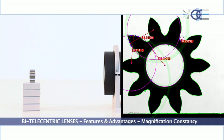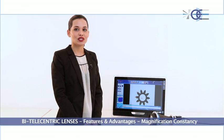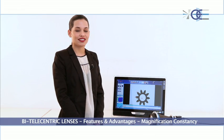This feature ensures that the dimension of an object whose distance from the lens changes will not be affected by measurement errors, since the image size won't change.